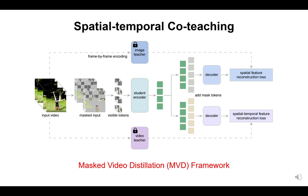Based on this observation, to leverage the advantages of different teachers, we propose a spatial-temporal co-teaching strategy for the MVD framework, where the student model is trained to reconstruct features from both the image teacher and video teacher with 2D coupled decoders. Through spatial-temporal co-teaching, stronger spatial representation and temporal dynamics can be learned at the same time.